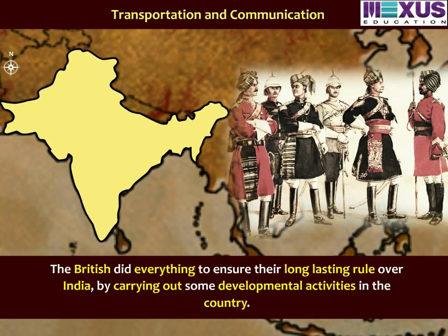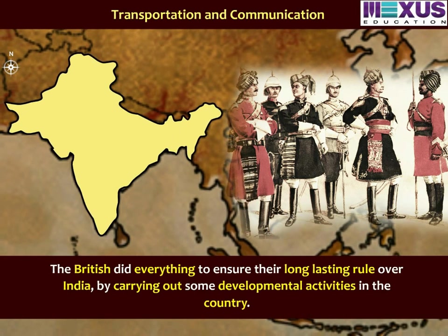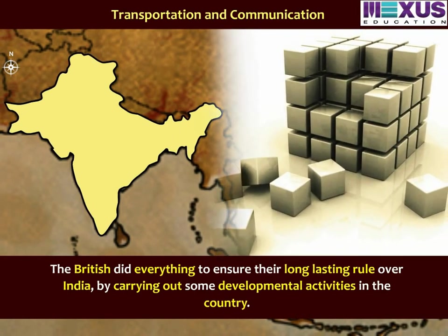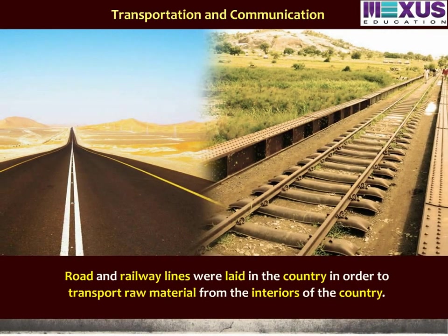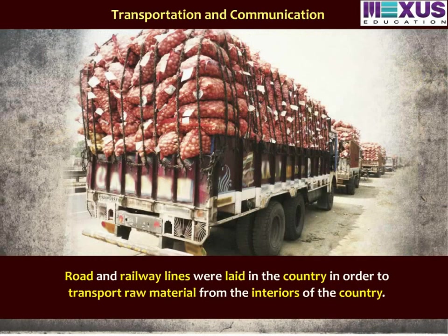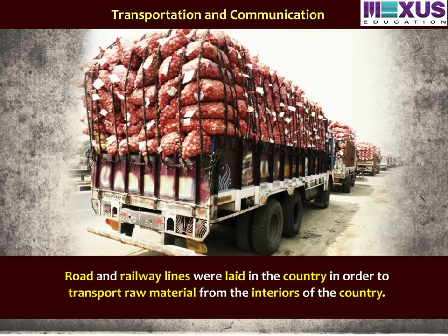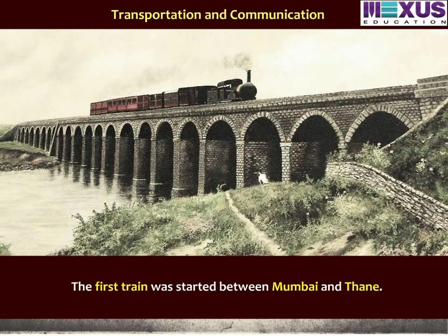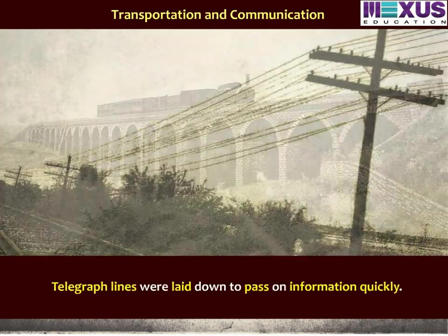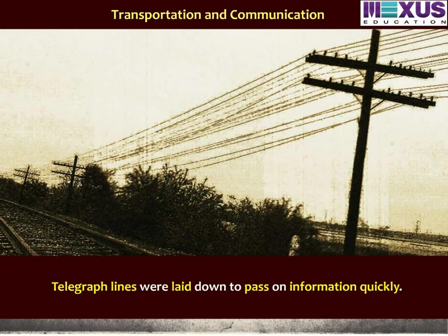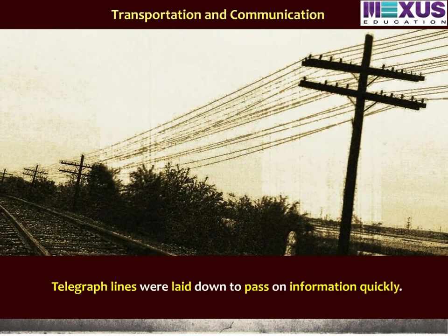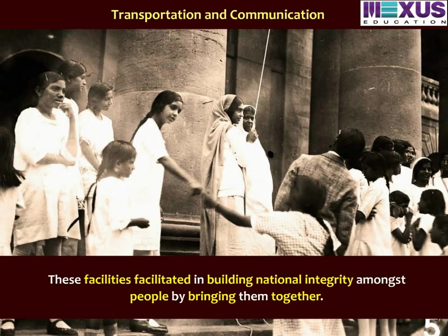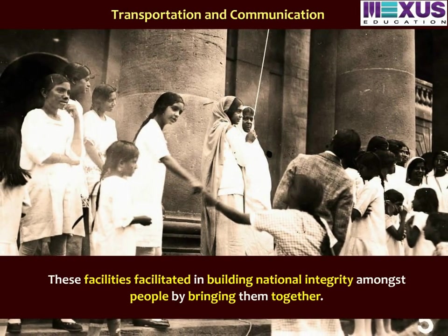The British carried out developmental activities to ensure their long-lasting rule over India. Road and railway lines were laid to transport raw material from the interiors of the country. The first train was started between Mumbai and Thane. Telegraph lines were laid down to pass on information quickly. These facilities facilitated the building of national integrity amongst people by bringing them together.